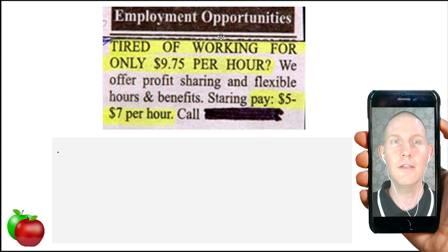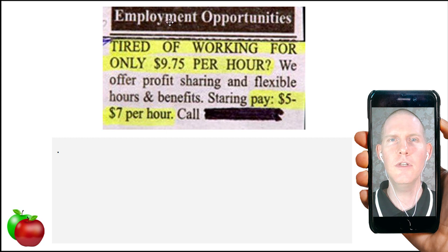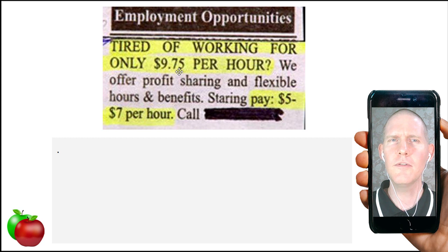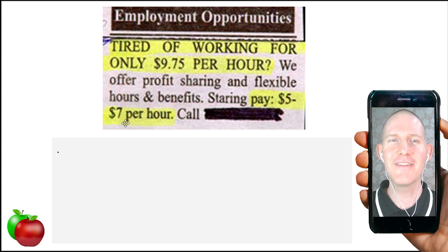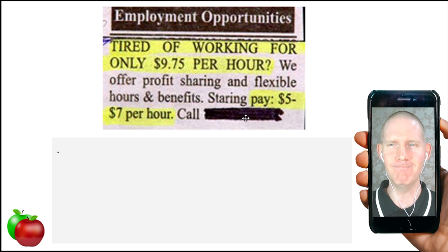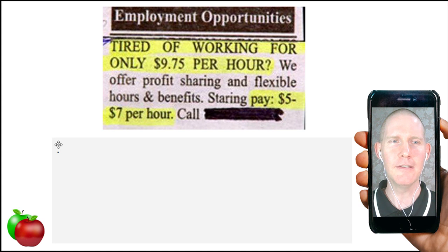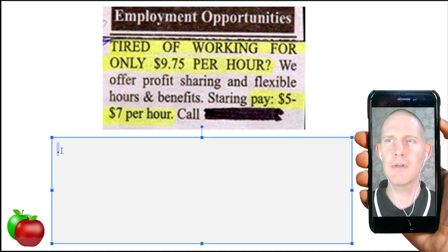Here we go — the next one is employment opportunities. This want ad in the classified section is advertising employment opportunities. It says: 'Tired of working for only $9.75 per hour? We offer profit sharing and flexible hours and benefits. Starting pay: $5 to $7 per hour. Call' — and then a number.